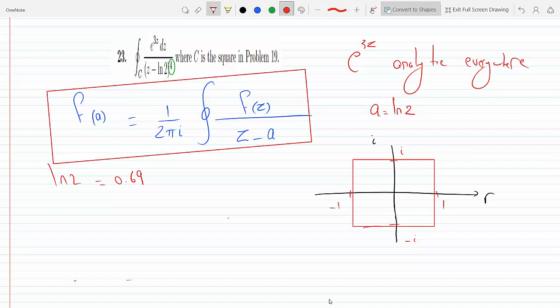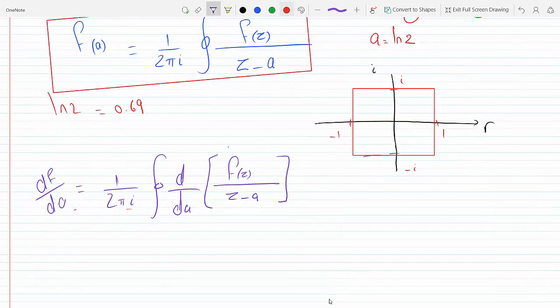So let's differentiate this with respect to A. Remember, so this is with respect to A. So DF over DA is equal to 1 over 2 pi i. I can take the derivative inside, so this is D over DA of F(z) over z minus A. So let's do the derivative inside, what do you get?